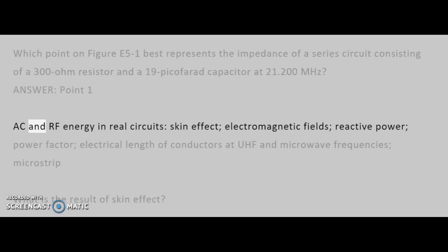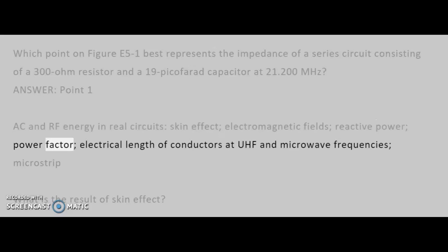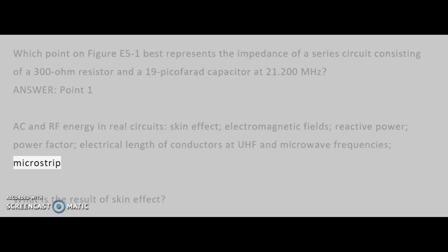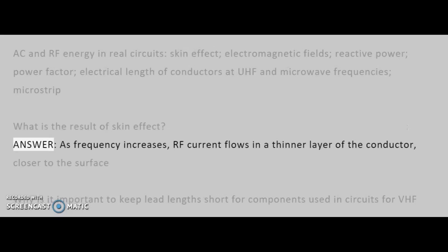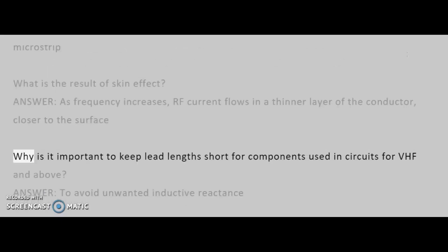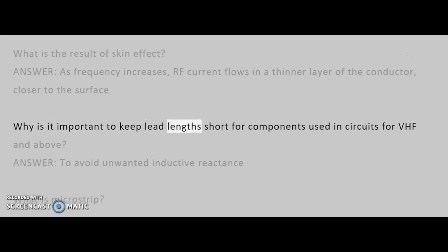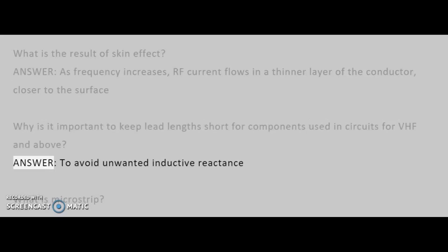AC and RF energy in real circuits group covers: skin effect, electromagnetic fields, reactive power, power factor, electrical length of conductors at UHF and microwave frequencies, and microstrip. What is the result of skin effect? Answer: As frequency increases, RF current flows in a thinner layer of the conductor, closer to the surface. Why is it important to keep lead lengths short for components used in circuits for VHF and above? Answer: To avoid unwanted inductive reactance.